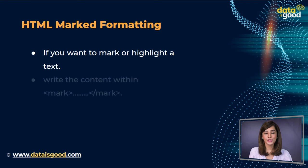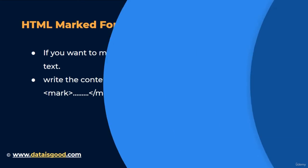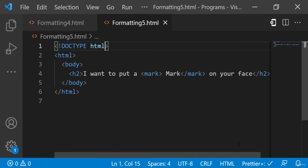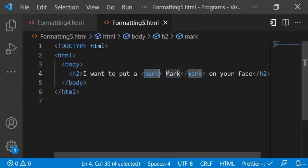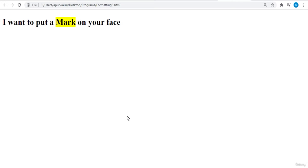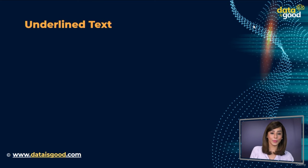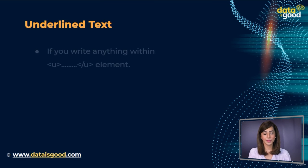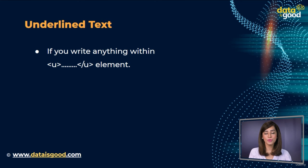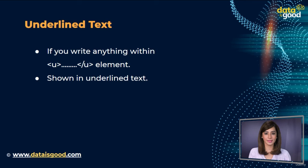HTML marked formatting. If you want to mark or highlight a text, you should write the content within `<mark>` tags. Here's an example: we have written text in the `<mark>` tags so that it will be displayed highlighted. Let's see the output — you can see the text is marked.